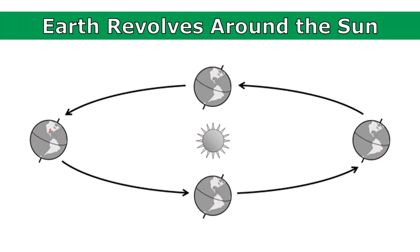When the part of the earth that we live on is tilted toward the sun, we experience summer. And when it's tilted away from the sun, we experience winter. And when the earth is not tilted directly toward or away from the sun, the seasons are milder, and we experience fall and spring.